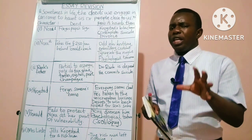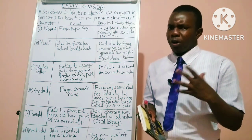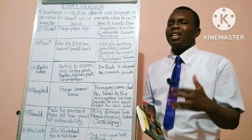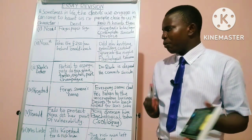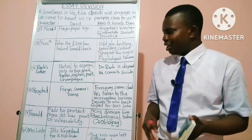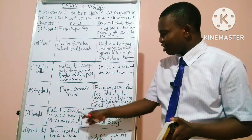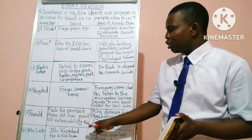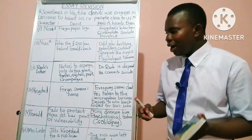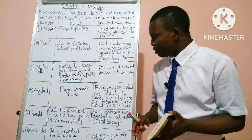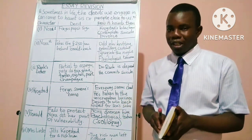Always give four points with at least three illustrations for each and every point. But there are also some additional points here — two more points you can look at. Number five, we have Torvald.